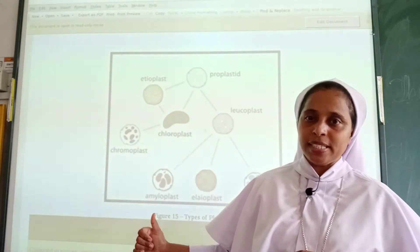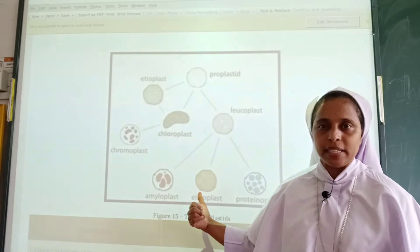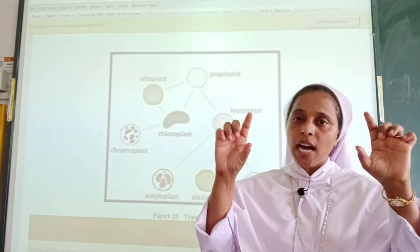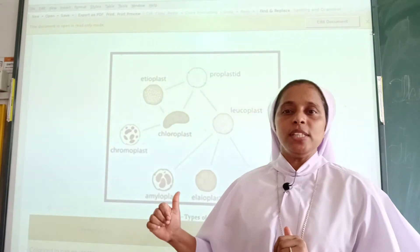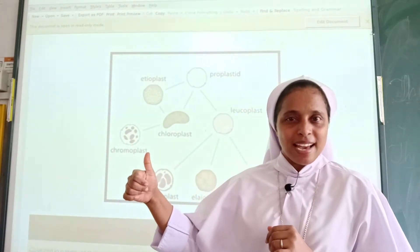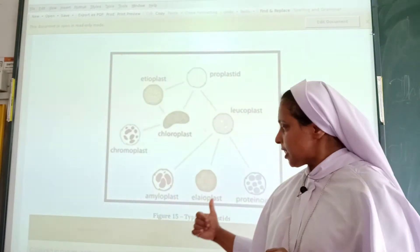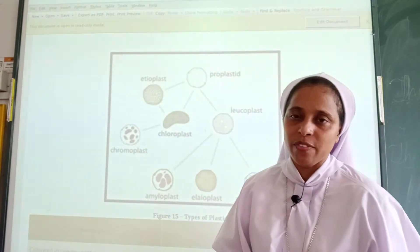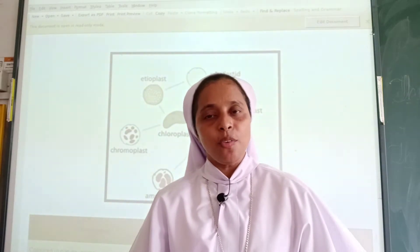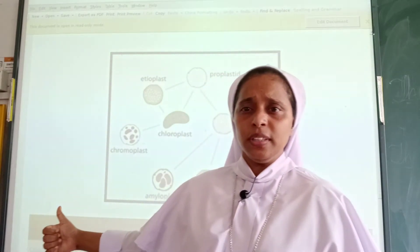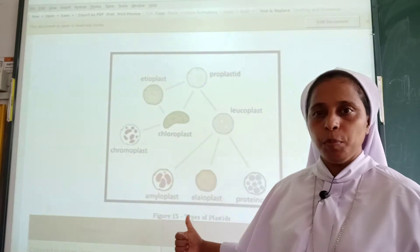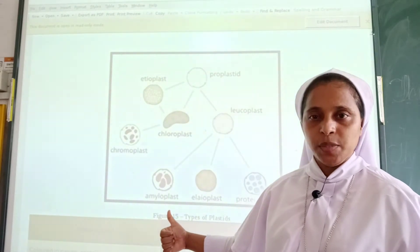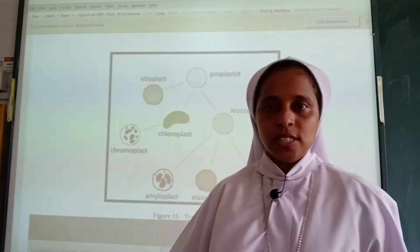The next classification of plastids is elaioplast. They are found in the epidermal cells of plants — the epidermal layer is the outer layer of the plant. Elaioplast stores oil, while amyloplast stores starch. The next one is proteinoplast, which is found in seeds and nuts, and it stores proteins. So amyloplast stores starch, elaioplast stores oil, and proteinoplast stores proteins.